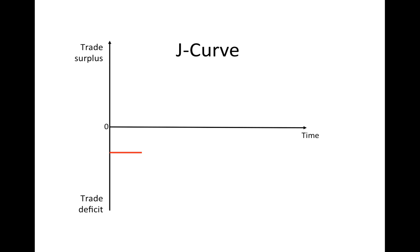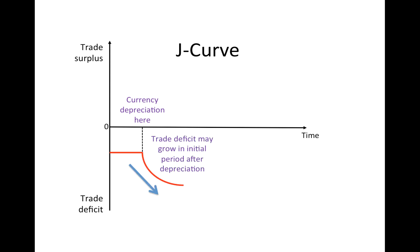We can represent this notion with the J-curve diagram. Suppose a country has a trade deficit — the balance of payments current account is negative — and it decides to depreciate its currency because net exports should increase. As we've seen, in the short run this will lead to a worsening of the current account, and therefore the trade deficit will increase. It's only as we move into the long run, when PED of exports and imports becomes relatively elastic, that the trade deficit starts improving — hence the J-shape of this curve.